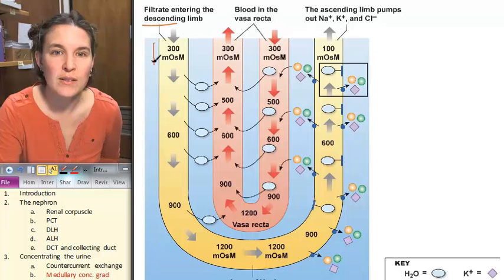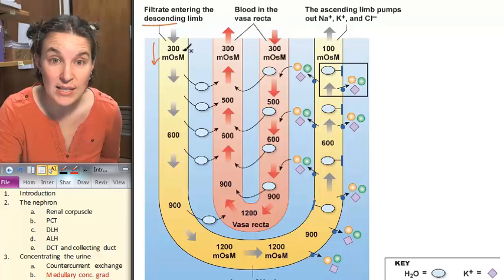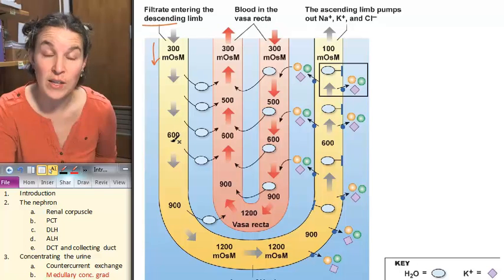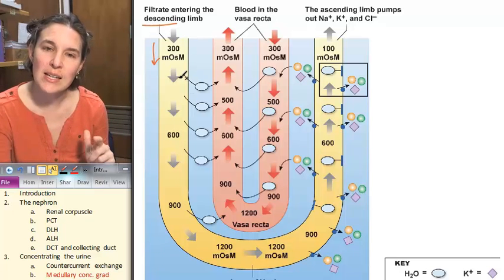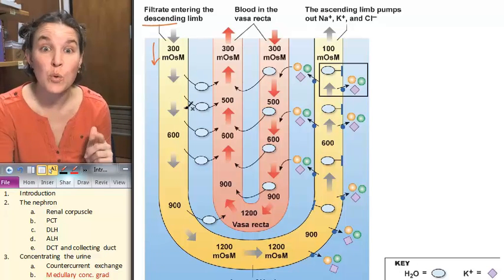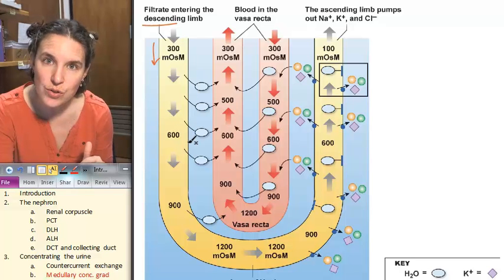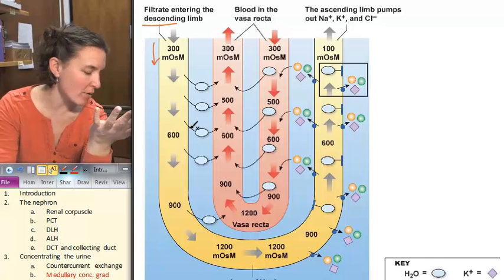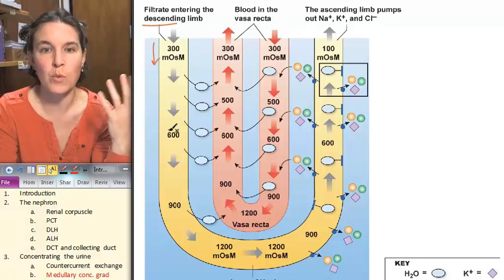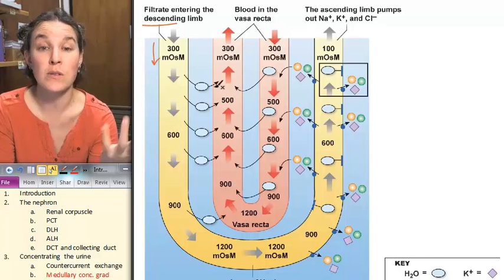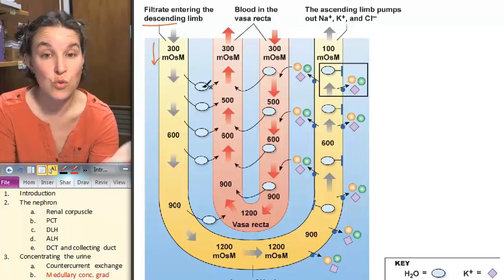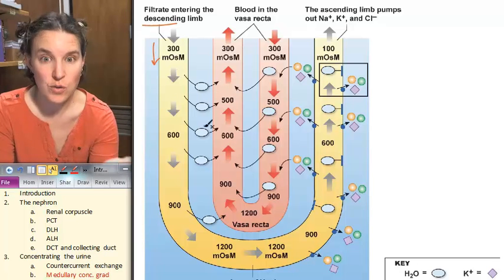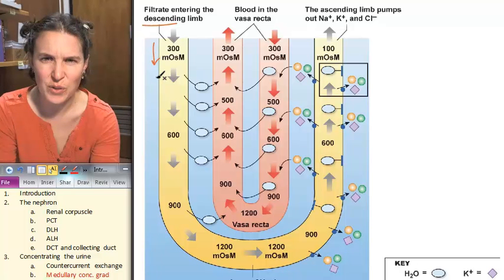Here comes our fluid. Our filtrate is heading down the descending loop of Henle. Remember, in the descending loop of Henle, all we're doing is we're pumping water out. You would think we're not pumping water out. I hope you know that we don't pump water. We're allowing water to diffuse down its concentration gradient through osmosis into this super concentrated interstitial fluid.